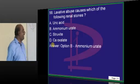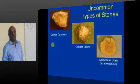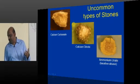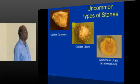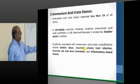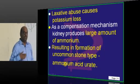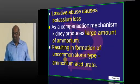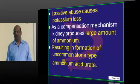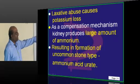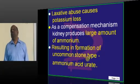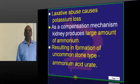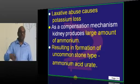Laxative abuse — why does it lead to stone disease? There are some uncommon stones: calcium carbonate, calcium citrate, ammonium urate, which form in laxative abuse. Typically laxative abuse makes the person lose potassium. As a compensation, since K+ is a positive ion and NH4+ is also a positive ion, the kidney compensates by producing large amounts of ammonium. Ammonium binds with urate to form ammonium acid urate stones in those with laxative abuse.